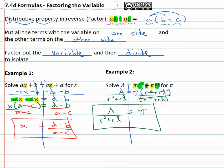When the variable's appearing in two places, what we'll do is we'll get the variable all on one side, anything without the variable on the other side, factor out the variable we want, and then divide to isolate our variable.